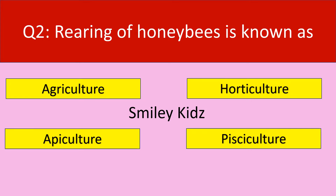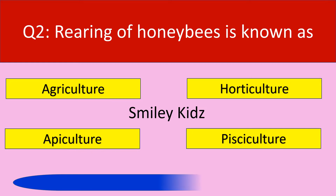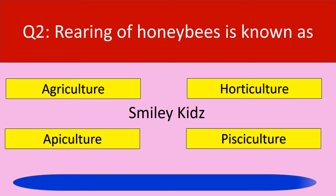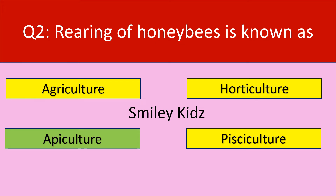Question number 2. Rearing of honeybees is known as. Options are agriculture, horticulture, apiculture, pisciculture. Your time starts now. The correct answer is apiculture. Rearing of honeybees is known as apiculture.